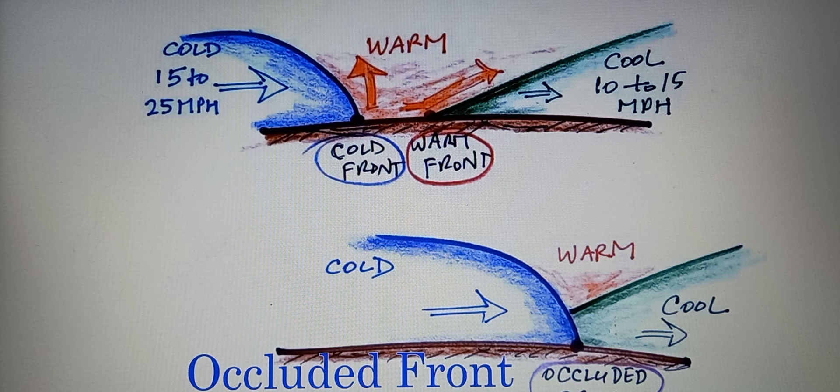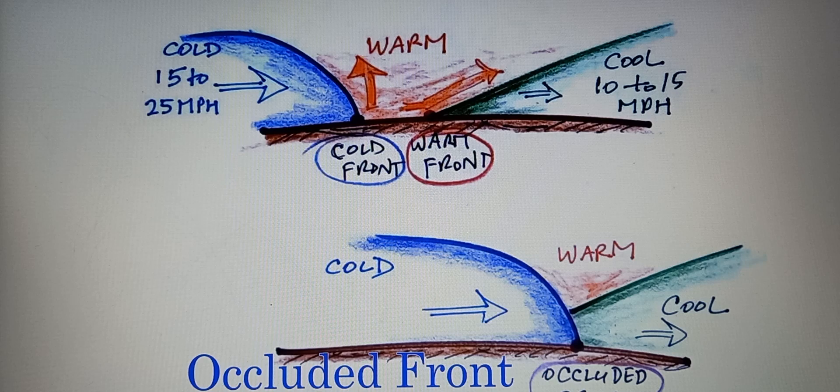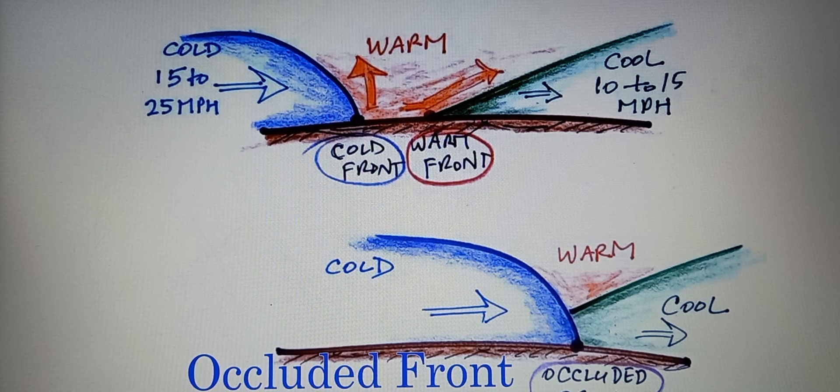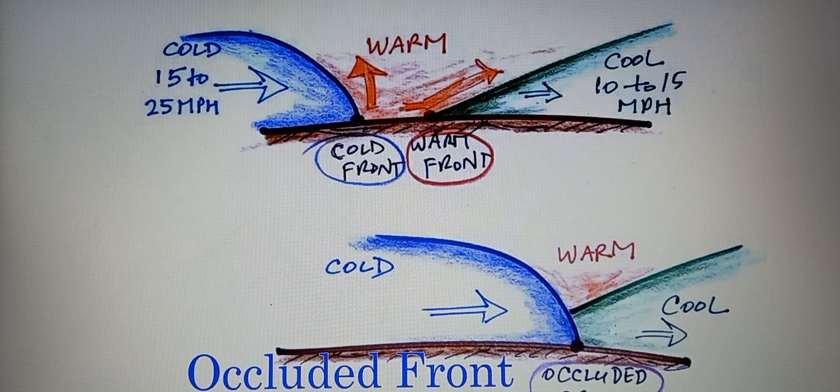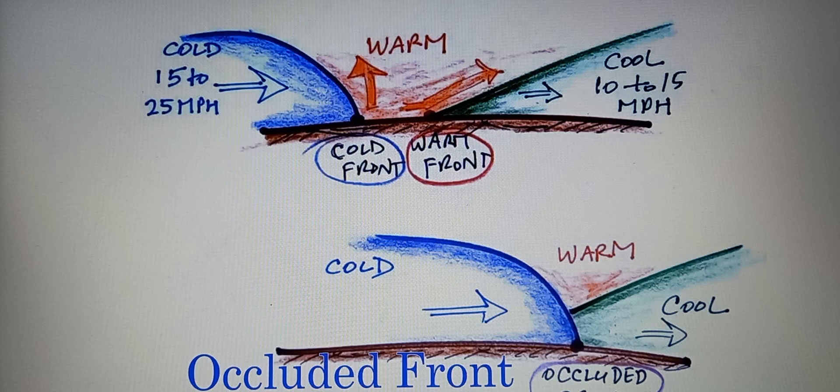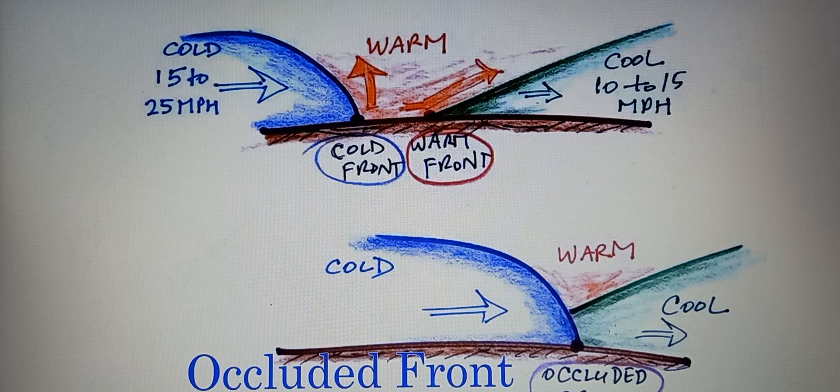Key features include a cold air mass wedging between warm air near the surface and cool air aloft, leading to mixed precipitation types, temperature barriers, and the interaction of air masses can create weather instability, potentially causing thunderstorms and heavy precipitation.